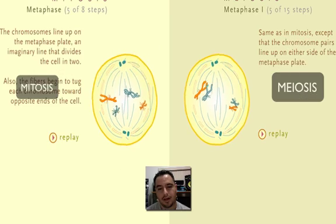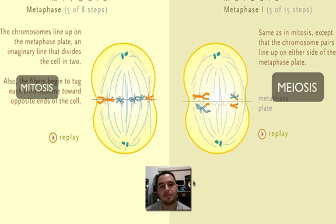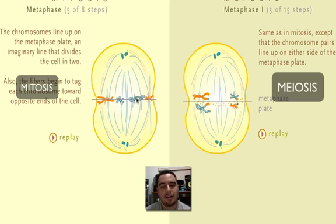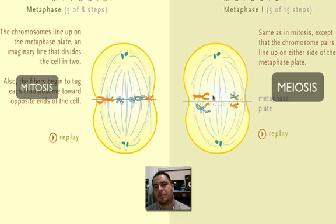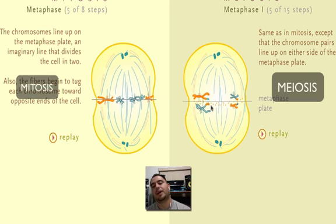Moving on — now we get to metaphase. Notice the difference: in mitosis you have a single file lineup of all the chromosomes, but here in meiosis at metaphase one you have them line up as homologous pairs. So look at that — single file versus double file in pairs of the same size.